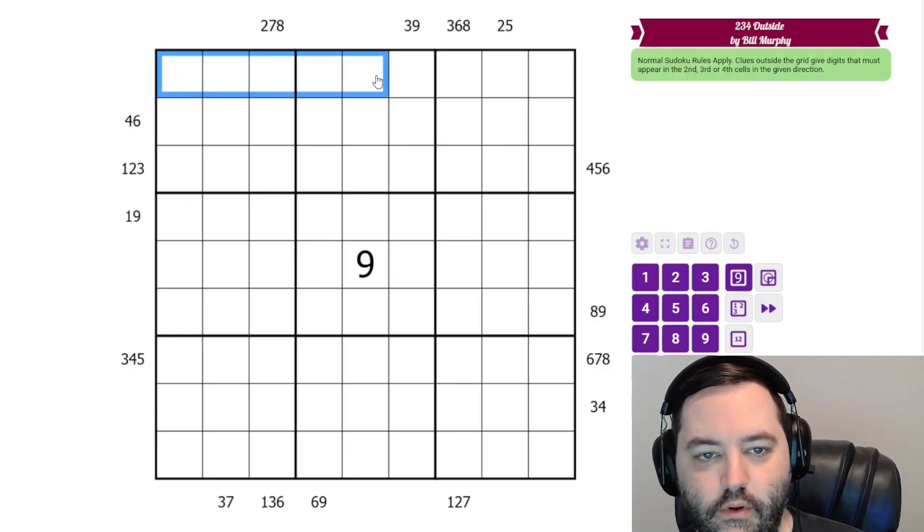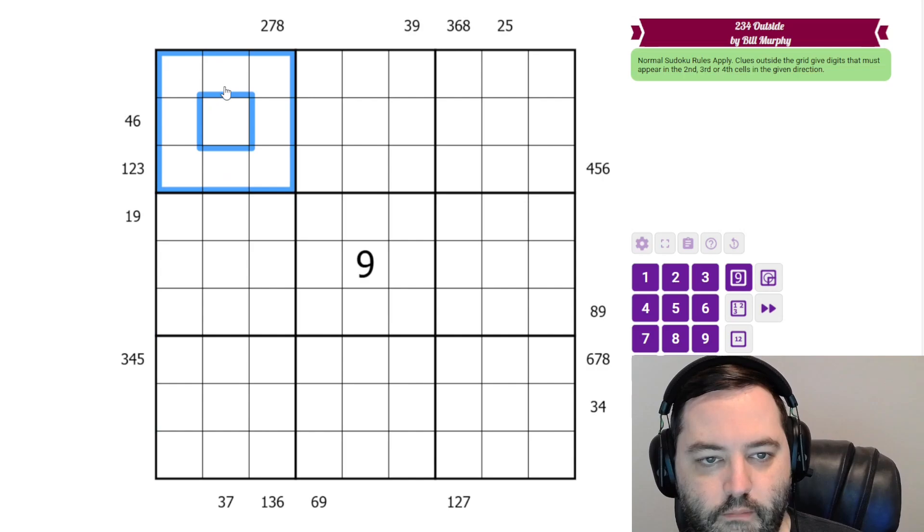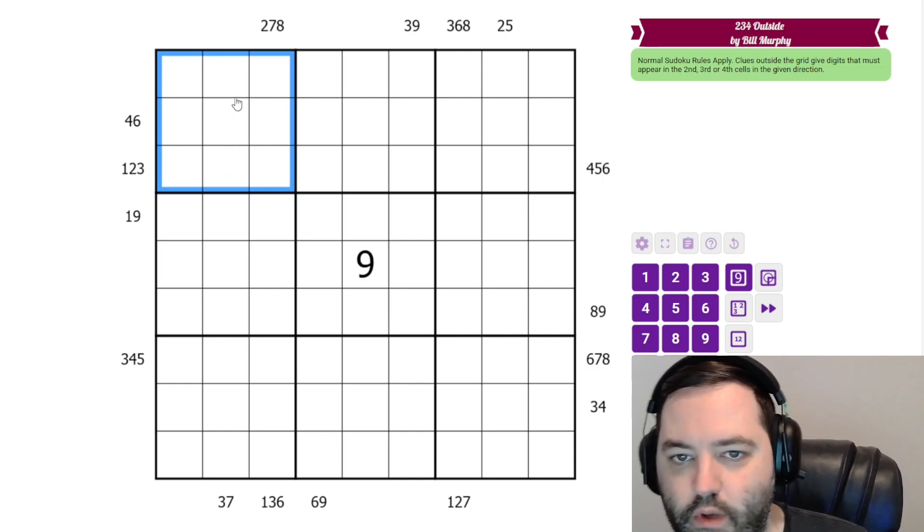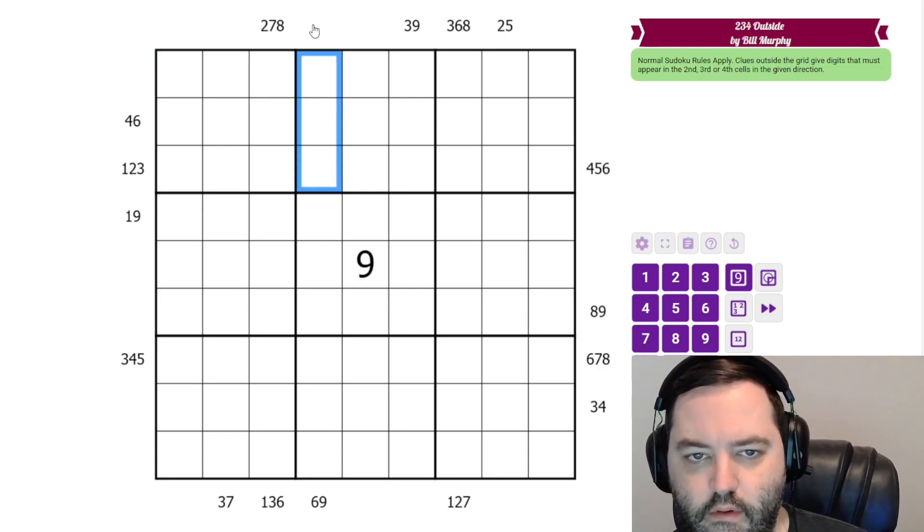We have normal Sudoku rules, one in each row, column, and three by three box. Additionally, we have some clues outside the grid, and there is outside Sudoku.